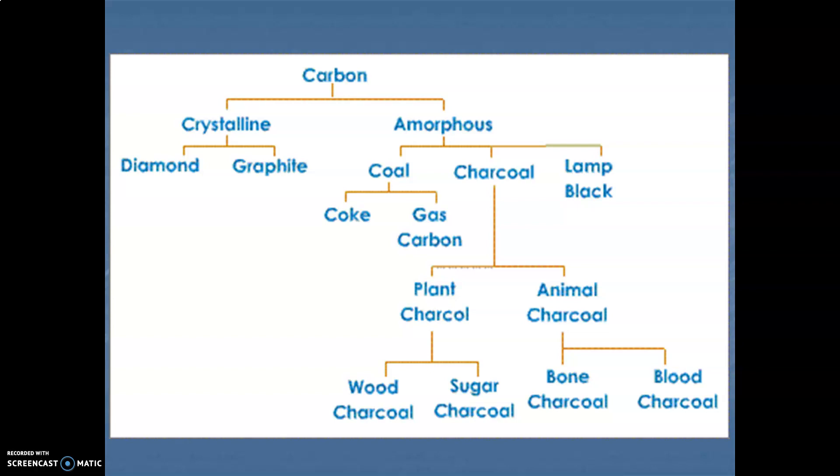If you see this flow chart carefully, carbon is classified into two forms - crystalline form and amorphous form. Crystalline is in the form of crystals and amorphous is a non-crystalline form, that means you can get it in the form of powdery substances or indefinite shape. They both are allotropes of carbon.